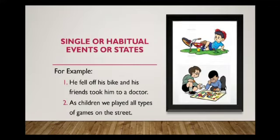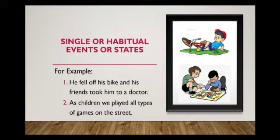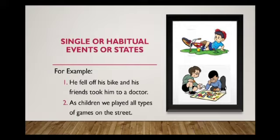Another use of simple past tense is for single or habitual events or states. For a one-time event: 'He fell off his bike and his friends took him to a doctor.' For habitual events: 'As children, we played all kinds of games on the streets' — an action that happened repeatedly in the past.